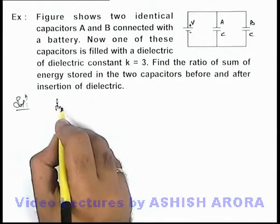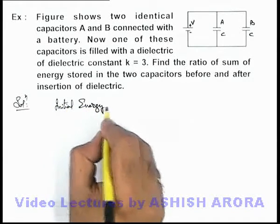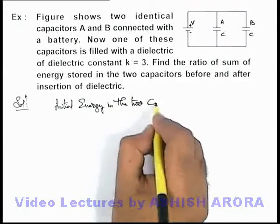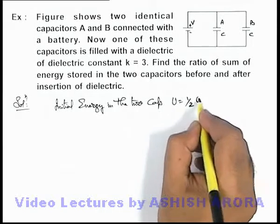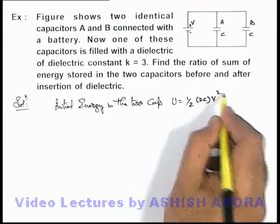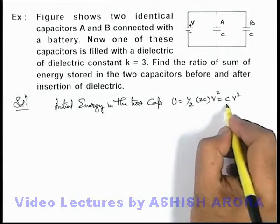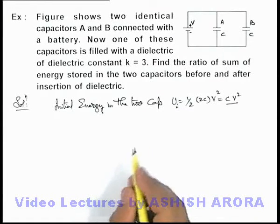So we can simply write initial energy in the two capacitors can be written as half, capacitance will be 2C multiplied by V square, so this can be written as CV square. This is the initial energy in the capacitor which we can represent with symbol U_i.